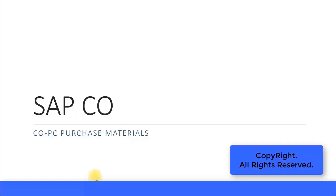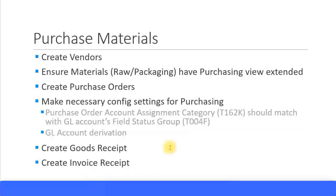Continuing with our product costing presentations, let's look at purchasing the materials. In this presentation we will look at creating the vendors — the vendors who we are going to buy from — the raw materials and the packaging materials. We ensure that the material master data have the purchasing view extended so that we can use those materials for purchasing. We will create some purchase orders and look at any errors and the necessary configuration settings we need to do for the purchase orders.